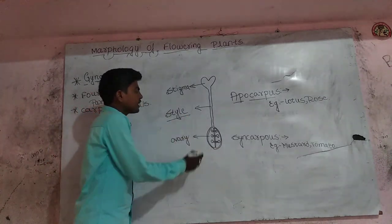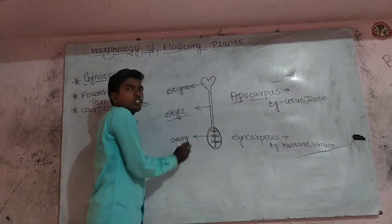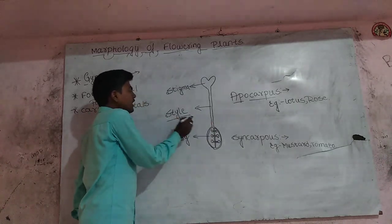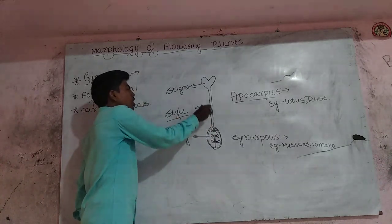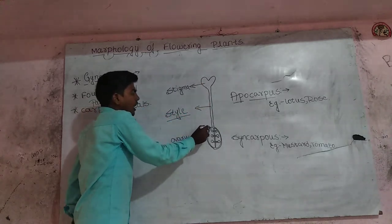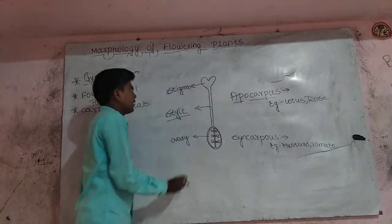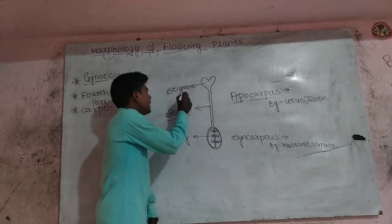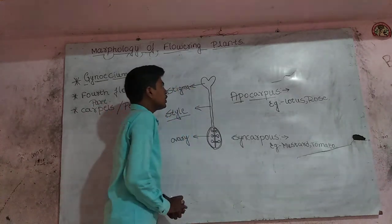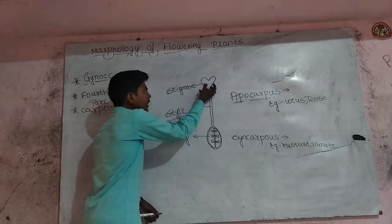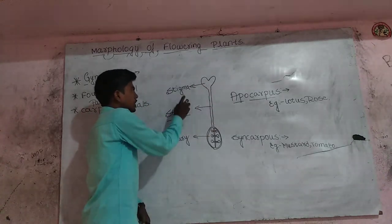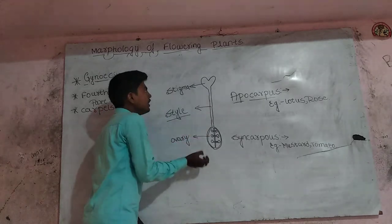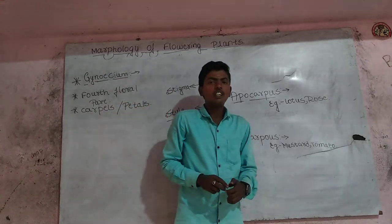The Style is the long or short tubular structure arising from the Ovary. The receptive portion of the Style is called the Stigma. It receives Pollen Grains during Pollination.